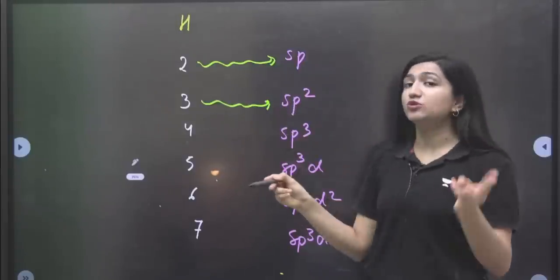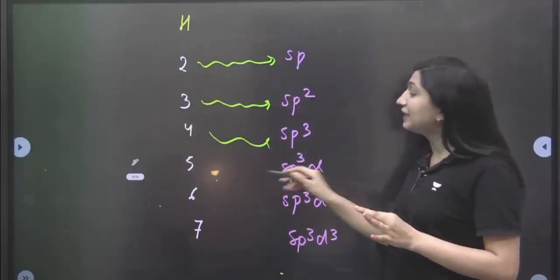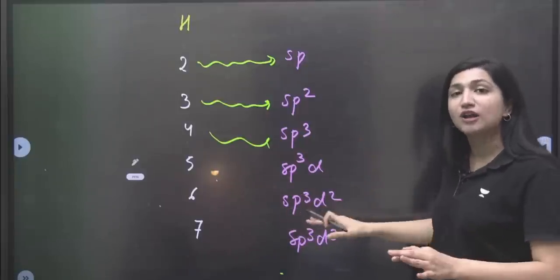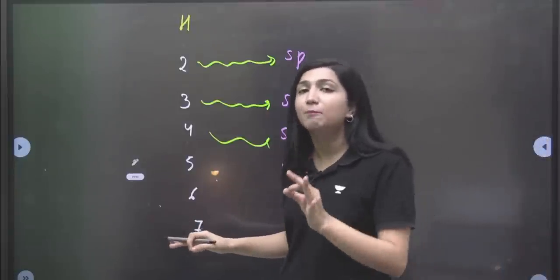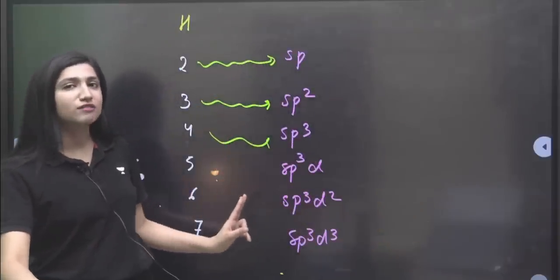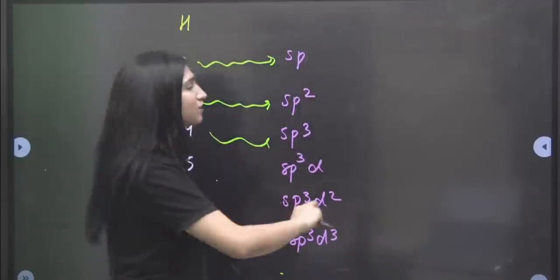Similarly, if your hybridization value is 3, then SP2, then SP3, SP3D, SP3D2, and SP3D3, and so on. That means if you have bond pair plus lone pair, you have hybridization value. And then you can easily tell what your molecule's hybridization will be. Let's see one example.